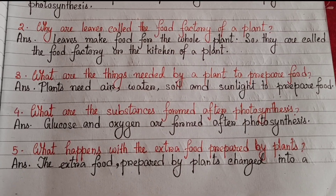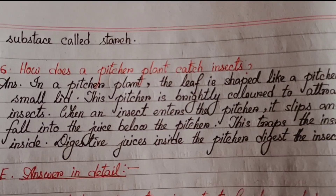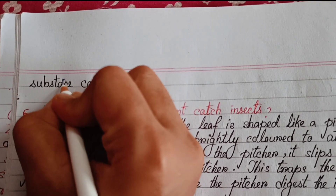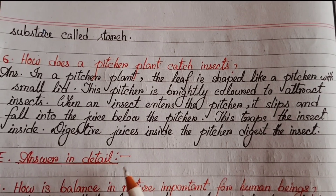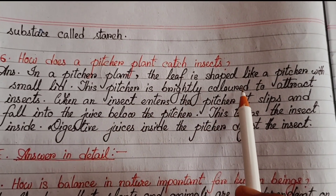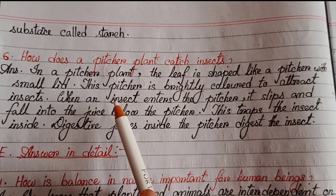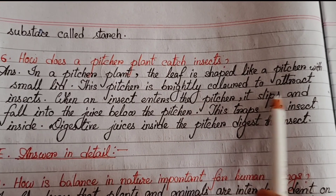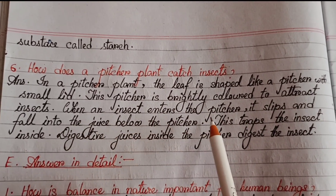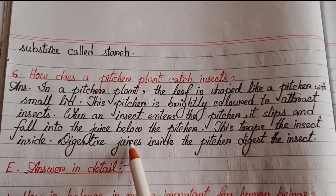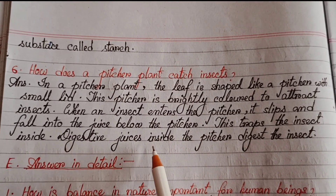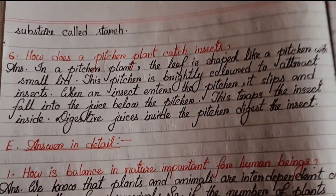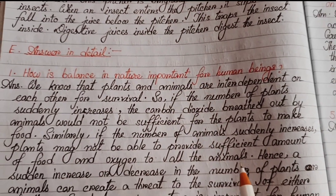Number five: What happens with the extra food prepared by plants? The extra food prepared by plants is changed into a substance called starch. Number six: How does a pitcher plant catch insects? In a pitcher plant, the leaf is shaped like a pitcher. This pitcher is brightly colored to attract insects. When an insect enters the pitcher, it slips and falls into the juice below. Digestive juices inside the pitcher then digest the insect.